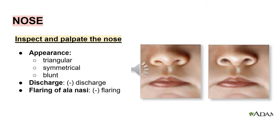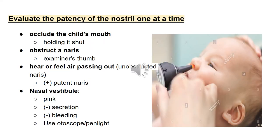Next is the discharge, and finally the flaring of the alae nasi. Evaluate the patency of the nostril one at a time. Simply occlude the child's mouth by holding it shut, then obstruct a naris with the examiner's thumb. The examiner can hear or feel air passing out of the unobstructed naris, and if he does, the naris is patent.